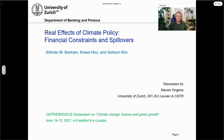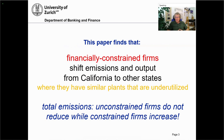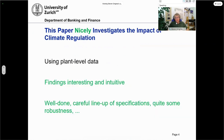The presenter did a really good job presenting the paper, which investigates the impact of the California Cap and Trade Program on US plants. It has plant-level data and finds that financially constrained firms are going to shift emissions, doing so with national plants that are underutilized, shifting to other states that are more lenient. The real downside is that constrained firms are actually going to increase their total emissions, shifting those emissions and negating the intended impact of this regulation.